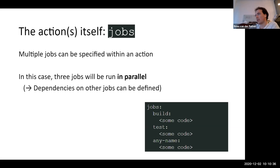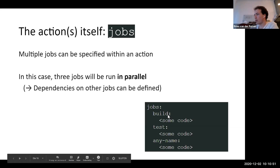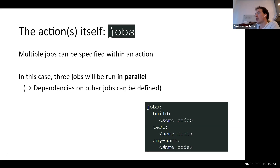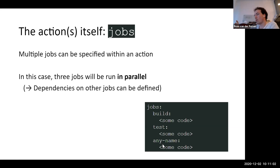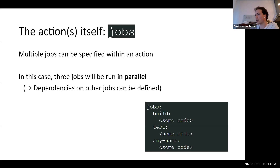Then there's the jobs section where the action is actually contained. You can specify multiple jobs within an action. In this example we specified three different jobs: build, test, and any-name. These will be run in parallel by default. You can also specify if you want one job to be dependent on another. The examples in the CS GitHub repo all contain a single job, but that job can consist of multiple steps.